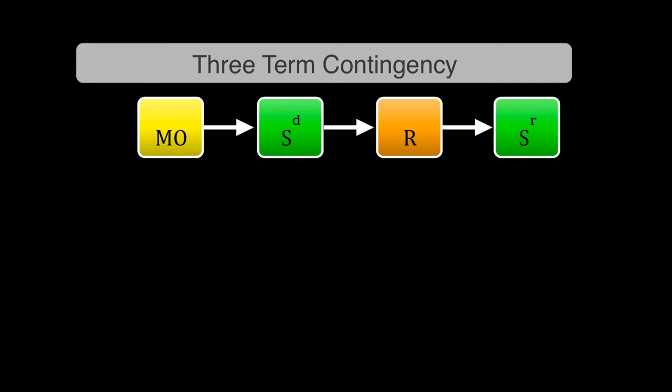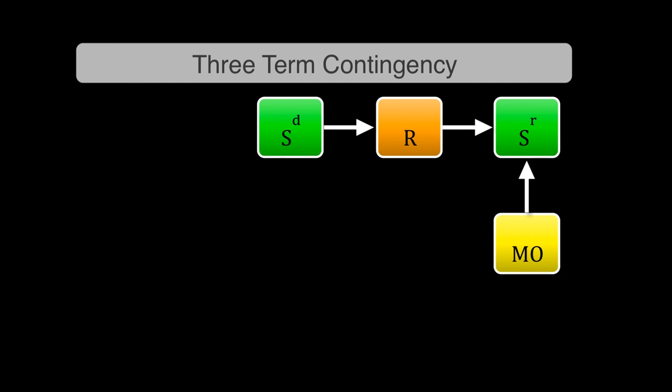MOs typically come in the three-term contingency. They're placed before the SD, so it typically reads MO, SD, R, SR. But in reality, a motivating operation affects the value of a reinforcer—it doesn't affect the value of the discriminative stimulus. So in reality, it kind of sits below it, but concurrent. It's weird, it's hard to talk about this stuff because it makes us think it's this weird chain and it always happens in that order. Sometimes things kind of happen concurrently, and that's kind of what the issue is with the motivating operation.